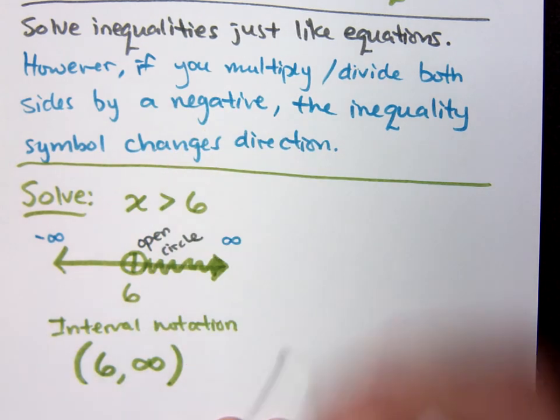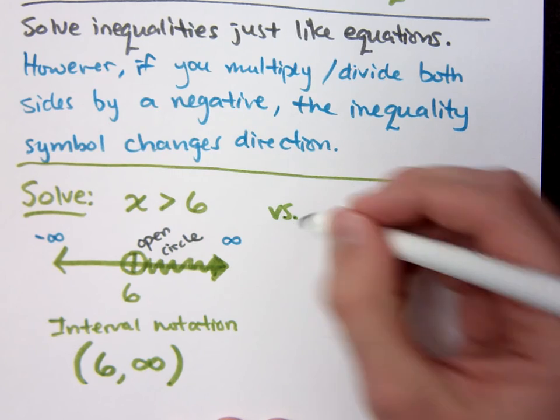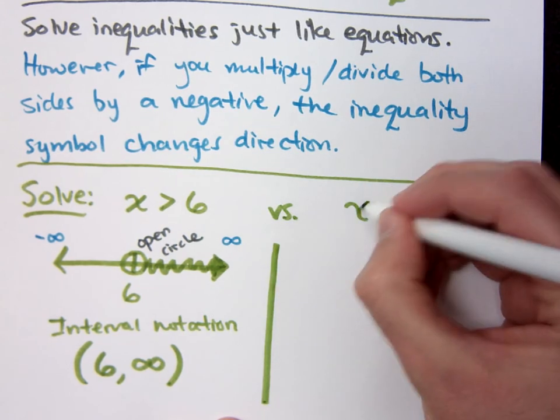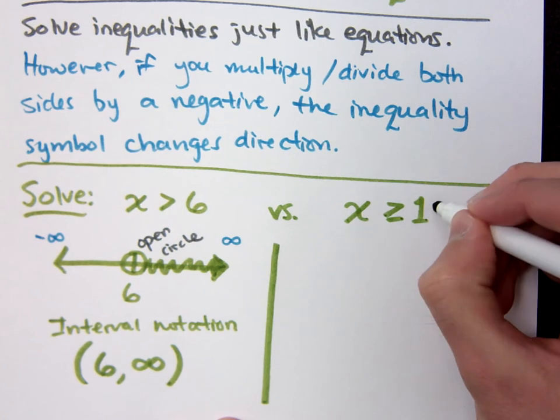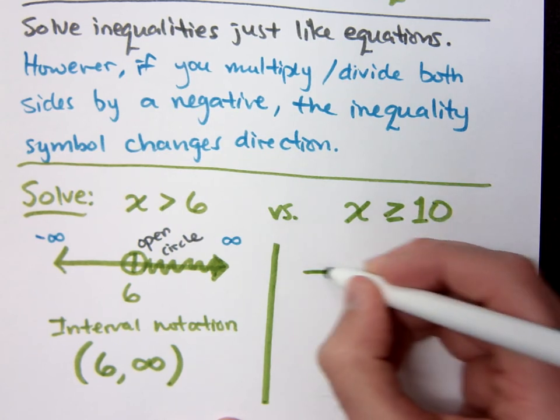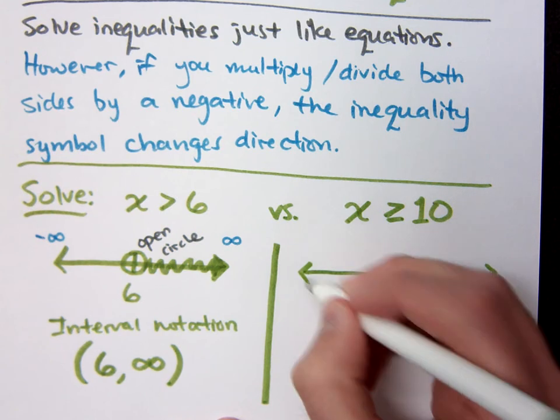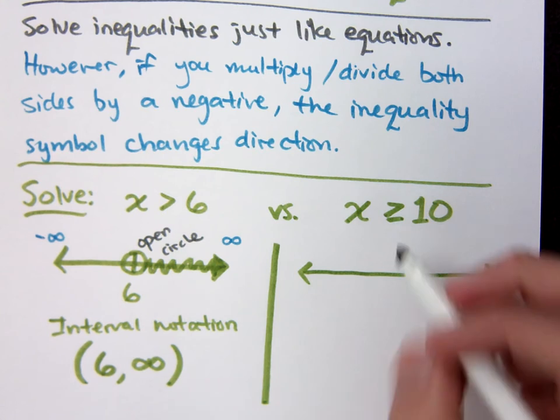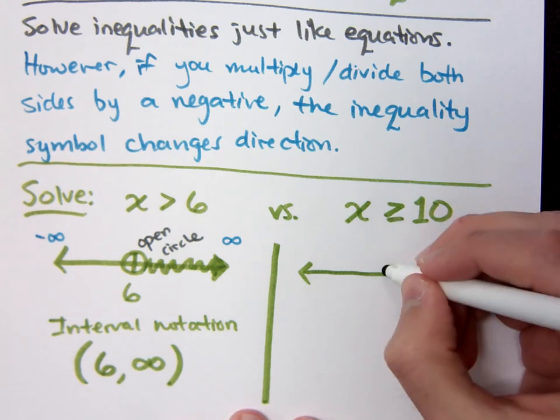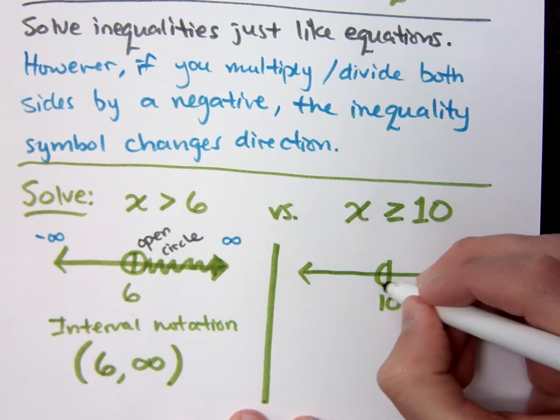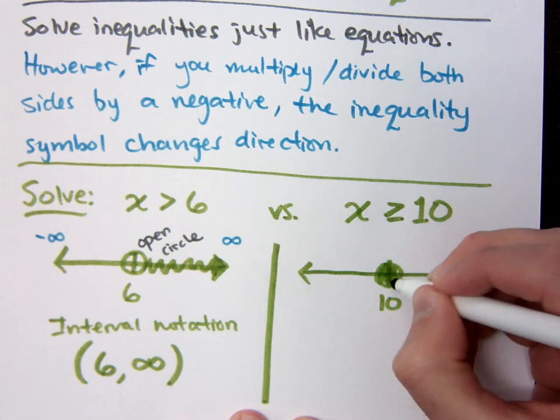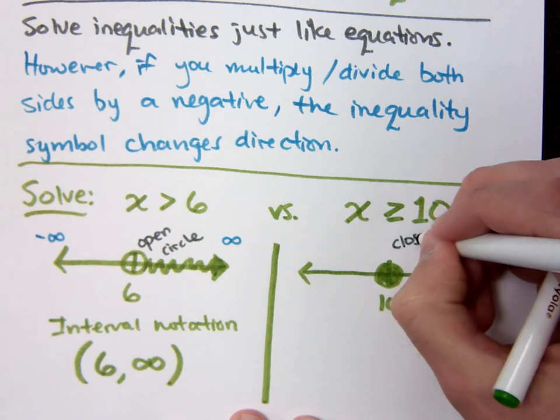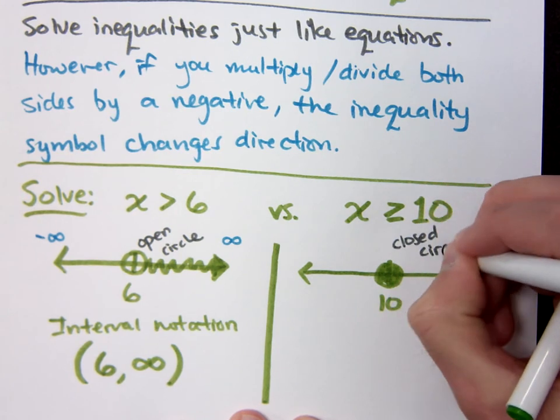Now, I want you to compare this inequality to this one if I were to say x is greater than or equal to 10. Now, what's the difference between these two other than the 6 and the 10? It's equal to, and it's a closed circle. This is equal to, and we will use a closed circle. So here's 10. I'm going to use a closed circle. Now, why is it closed? Because it's equal to. Because I get to be equal to. That means I get to include that. So this is a closed circle.